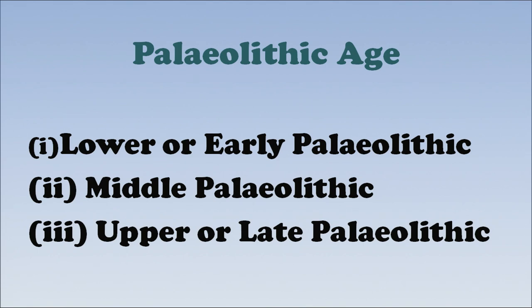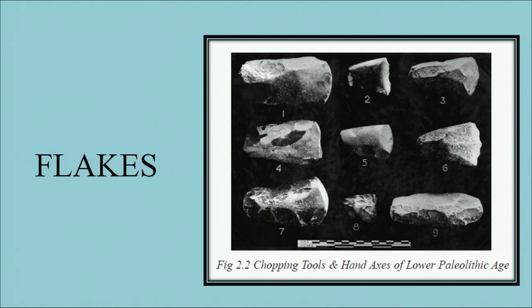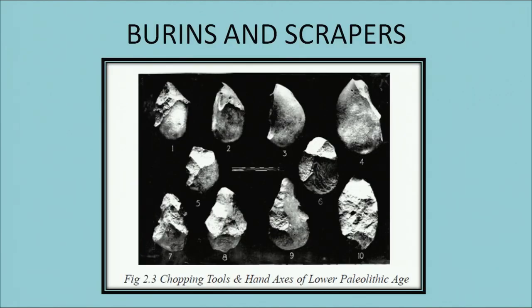On the basis of tools made and used, the Paleolithic cultures have been divided into three phases: number one, lower or early Paleolithic; number two, middle Paleolithic; and number three, upper or late Paleolithic. Hand axes had a broader end with a narrow top edge and were used for cutting trees or digging roots. Flake tools were the chief tools during the Middle Paleolithic period, used to scrape the skin of animals and bark from trees. The tools of the Upper Paleolithic period primarily consisted of burins and scrapers, used for engraving on soft stones, bones and rocks.